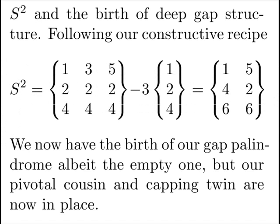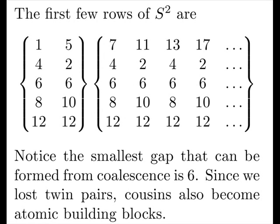S2 and the birth of deep gap structure. Following our constructive recipe, we see now that we have the birth of our gap palindrome, albeit the empty one. But our pivotal cousin and capping twin are now in place. Also notice we finally have some structure. The first few rows of S2 with residuals as follows. Notice the smallest gap that can now be formed from coalescence now is 6. Not only have we lost twins, but cousins now become atomic building blocks. It just can't be created from coalescence again. Nothing smaller than 6.